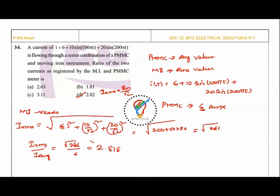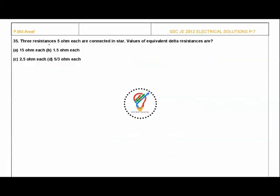Next question: Three resistors of 5 ohms each are connected in star. What is the equivalent delta? When converting equal resistances from star to delta, multiply by 3. So 3×5 = 15 ohms. The answer is A.